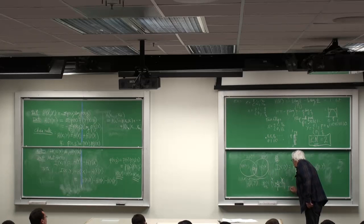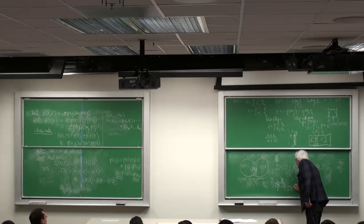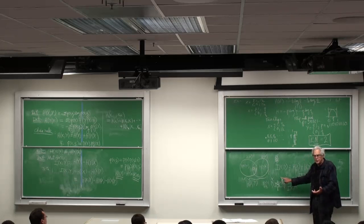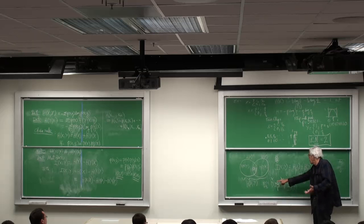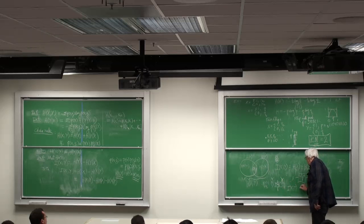Then I of XY is H of Y, that's one bit, minus H of Y given X, that's H of P.